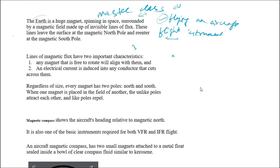Earth is generally considered as a huge magnet which is spinning in space, surrounded by a magnetic field made up of invisible lines of flux. Earth consists of a north and a south pole. The magnetic lines of force start from the north pole and end at the south pole. These lines leave the surface at the magnetic north pole and re-enter at the magnetic south pole — as we know from physics.